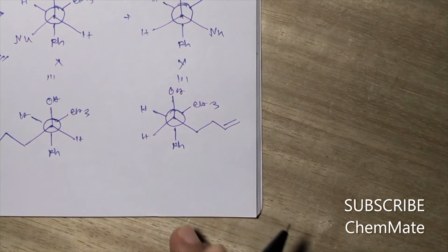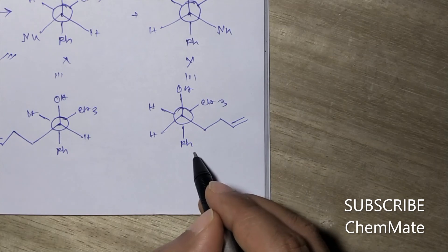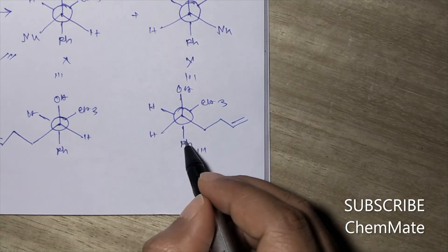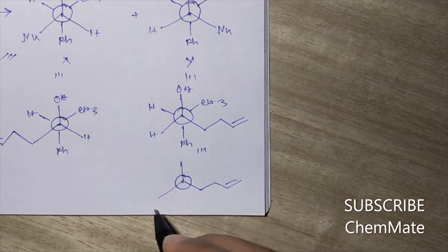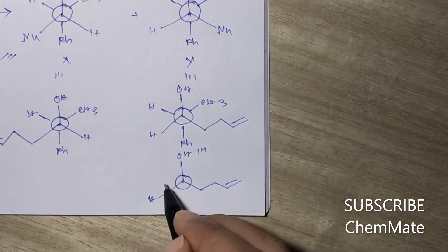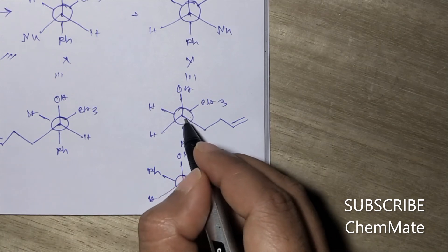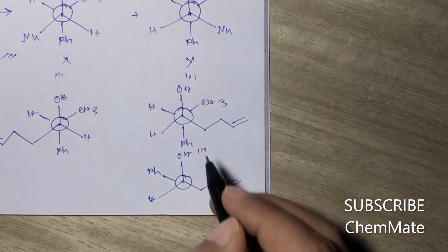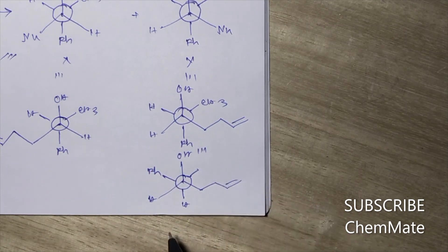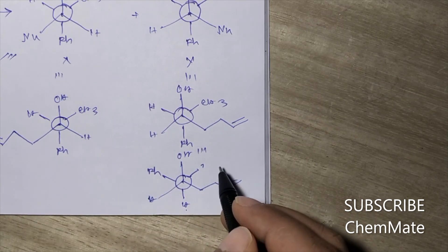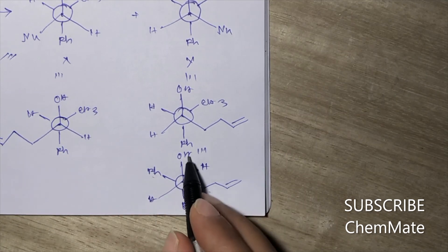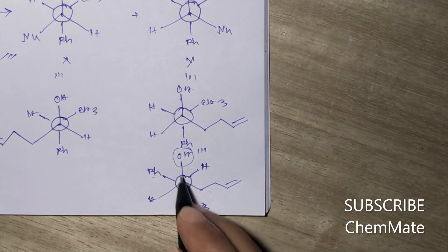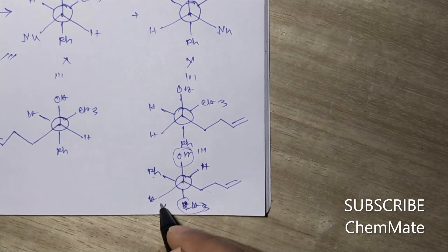For product Y, if we draw the phenyl and allyl group in extended form and rotate the back carbon, phenyl will be here and hydrogen will be here, with CH₃ in its position. In the extended form, OH and CH₃ are in opposite directions — one above and one below the plane — so this product will be the minor product.